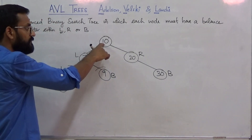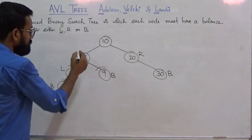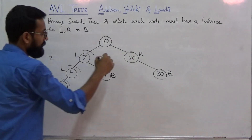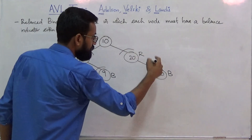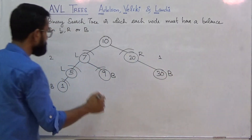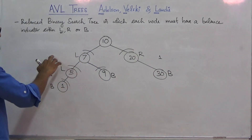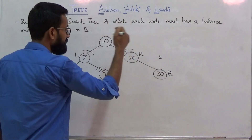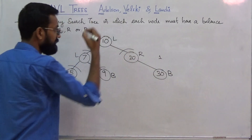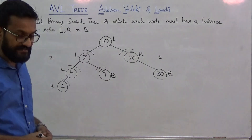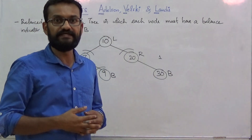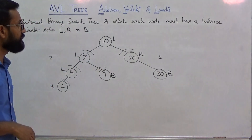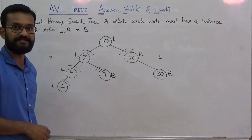Now consider node 10. The left subtree is rooted at 7 with height 2, and the right subtree is rooted at 20 with height 1. Since the left subtree's height is 1 greater than the right subtree's height, this node is left-heavy (L). Since it is possible to mark a balance indicator of either L, R, or B to each and every node in this binary search tree, we can call this binary search tree an AVL tree.